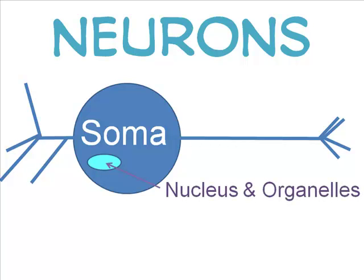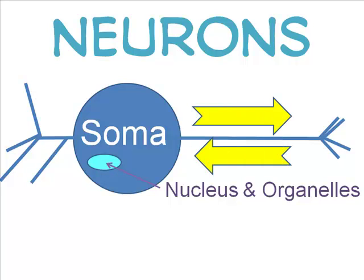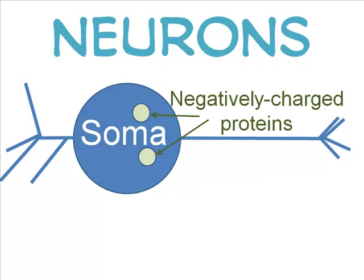Some of these proteins are used locally, and others are transported down the axons to the axon terminals and back again. The soma also contains protein molecules that are stuck inside it — they are too big to pass through the wall of the cell. But these molecules hold a negative electrical charge, so the inside of the neuron is negative compared to outside its membrane wall.